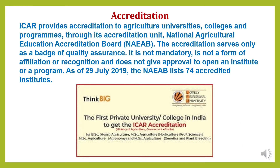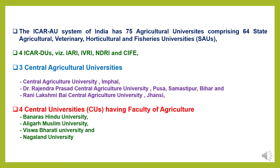ICAR also holds the responsibility of accreditation. It provides accreditation to agriculture universities, colleges, and programs through its National Agriculture Education Accreditation Board (NAEAB). Accreditation serves as a badge of quality assurance; it is not mandatory, not a form of affiliation or recognition, and does not give approval to open an institute or a program. As of 29 July 2019, the NAEAB listed 74 accredited institutes. The ICAR agriculture university system comprises 75 agriculture universities, including 64 state agriculture, veterinary, horticultural, and fisheries universities.